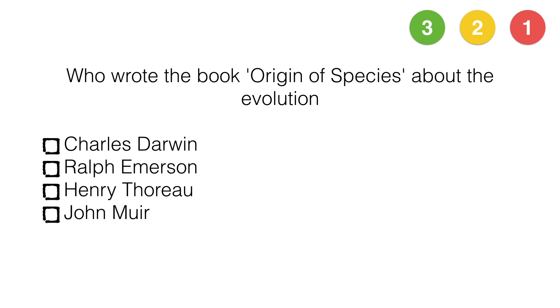Who wrote the book Origin of Species about evolution? Charles Darwin, Ralph Emerson, Henry Thoreau, or John Muir?